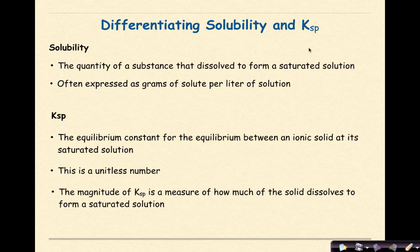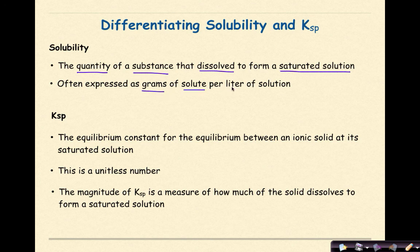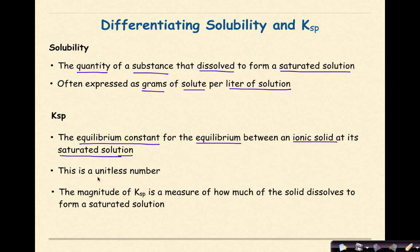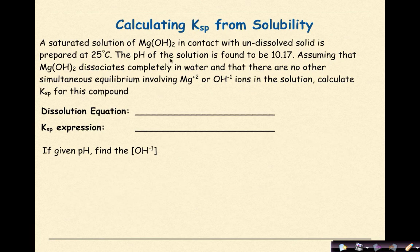Differentiating between solubility and KSP: Solubility is defined as the quantity of a substance that dissolves to form a saturated solution, often expressed as grams of solute per liter of solution. KSP is the equilibrium constant for the equilibrium between an ionic solid and its saturated solution — a unitless number whose magnitude measures how much solid dissolves.